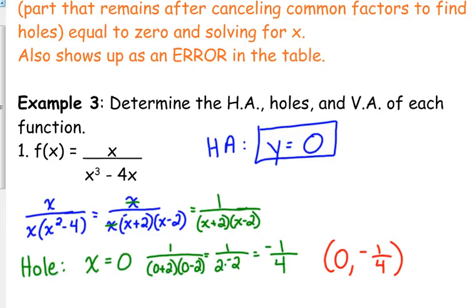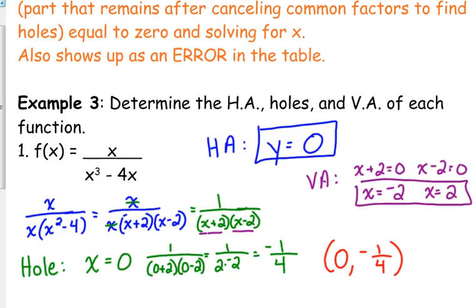And last thing we've got is our vertical asymptotes. We take what's left in the denominator after simplifying, set it equal to zero. In this case, we have two. We have a vertical asymptote at x equals negative two, and we have one at positive two. It is possible to have multiple vertical asymptotes. You can have any combination of these. You don't have to have every single type of discontinuity in your rational function.